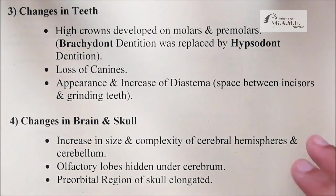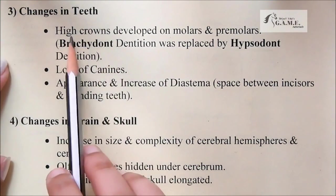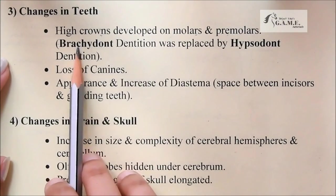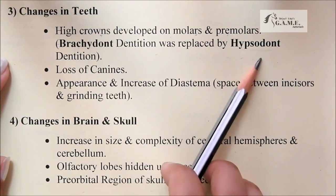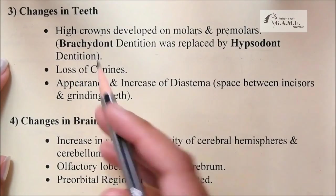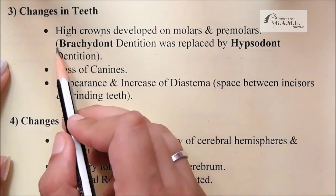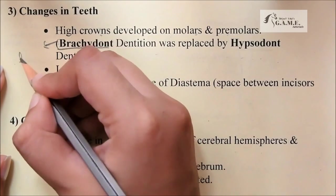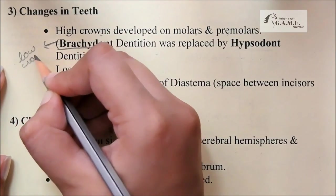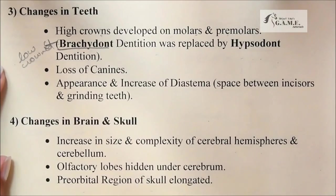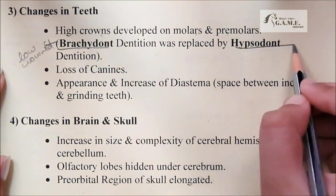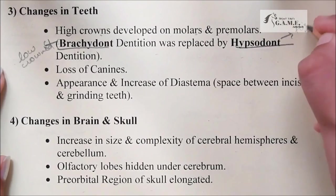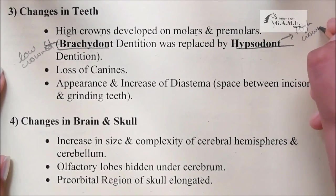Next are changes in teeth. High crowns developed on molars and premolars. Brachydont dentition — which refers to low-crowned teeth — was replaced by hypsodont dentition, meaning high-crowned teeth. These are the main changes in the teeth.